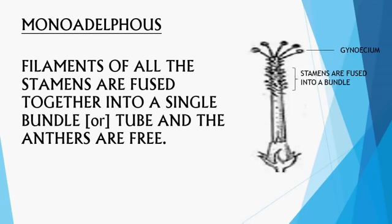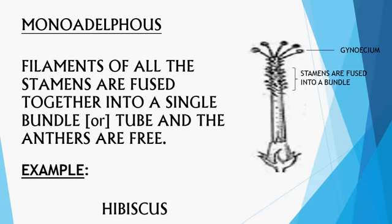In monoadelphous condition, the filaments of all the stamens are fused together into a single bundle or tube, and the anthers are free. In this photograph, the stigmas are united into a single style opening into the ovary, and the hair-like anthers surround it, with their filaments united to form a tube enclosing the style. Example: hibiscus.